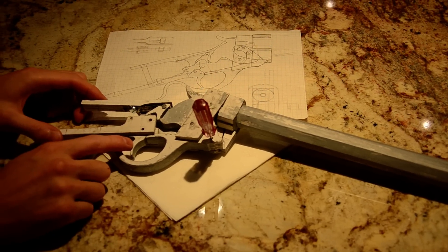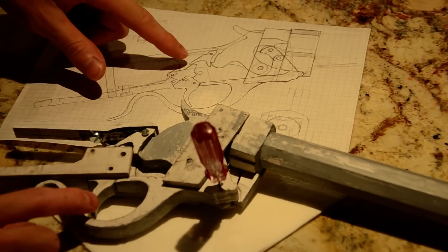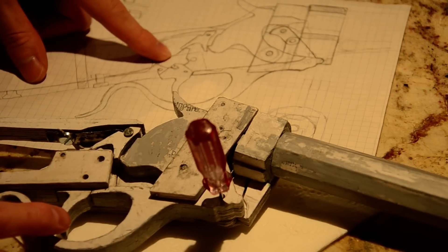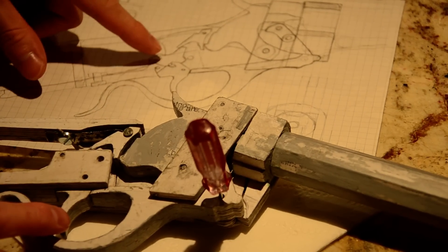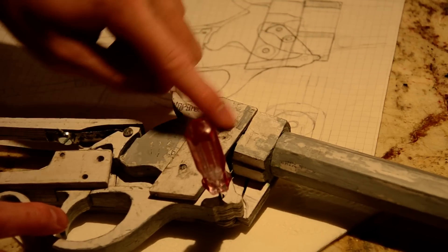So you have the trigger, the sear, and I guess you could call it a sear actuator that's connected to the trigger. And then you have the hammer and the breech block, that's right here.